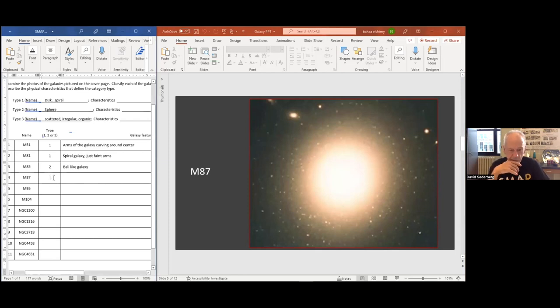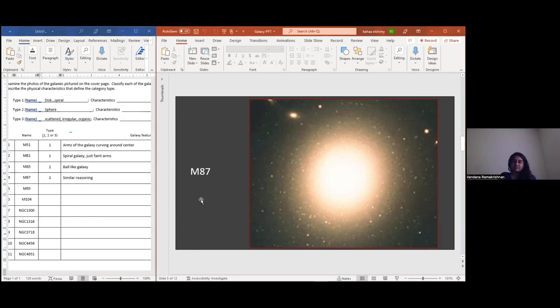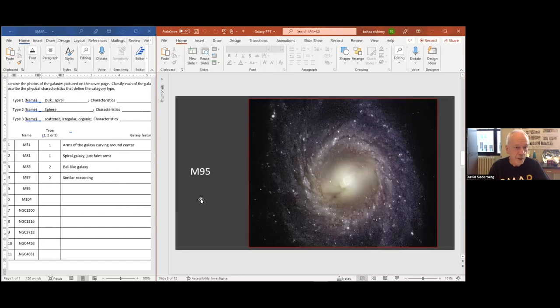M87. Disk, sphere, or organic? What do you think? It seems like for this one too. Yeah. We're going to call this one a sphere based on everybody. And that would be category two. And again, I think we can use the same logic we used before. It's shaped like a ball. So it's brighter in appearance. It could be that it has more stars or it could be that it's a little closer than one of the others. All right. Let's go on to the next one, which would be M95.